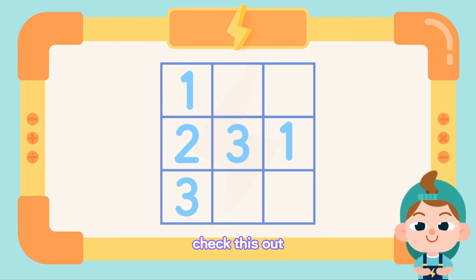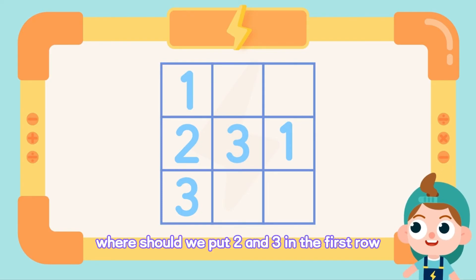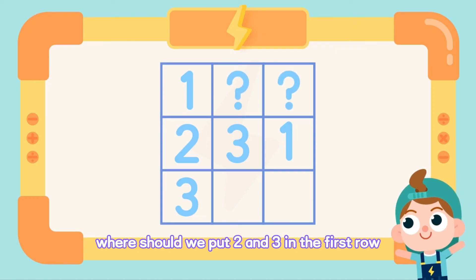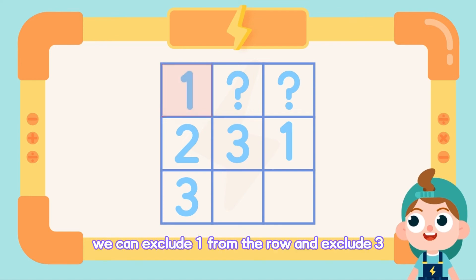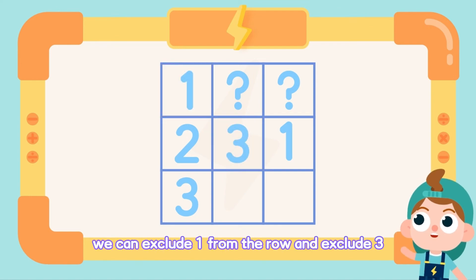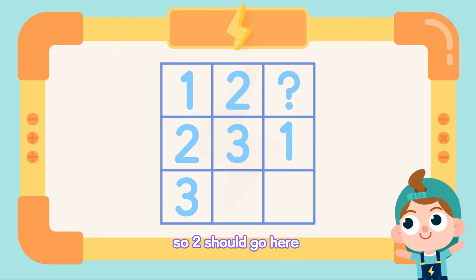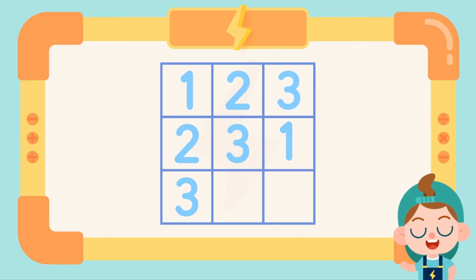Check this out. Where should we put two and three in the first row? Look at this column. We can exclude one from the row and exclude three from the column. So two should go here and three should go here.